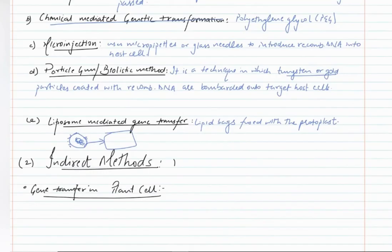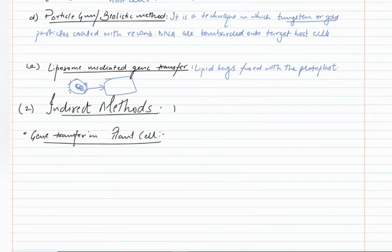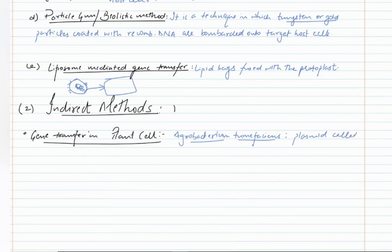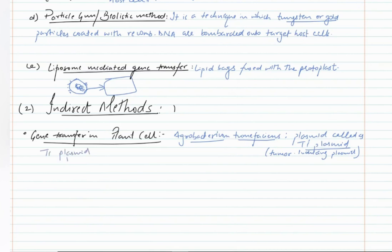Now we come to the indirect methods. For gene transfer in plant cells, we use a pathogenic bacterium called Agrobacterium tumefaciens. It produces the crown gall or plant tumor disease in almost all dicots. This bacterium has a plasmid called the Ti plasmid, which is the tumor inducing plasmid.